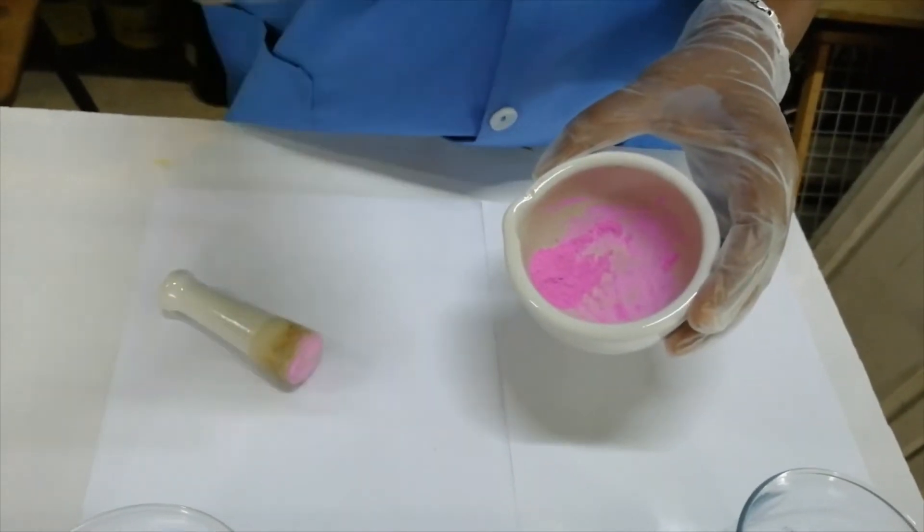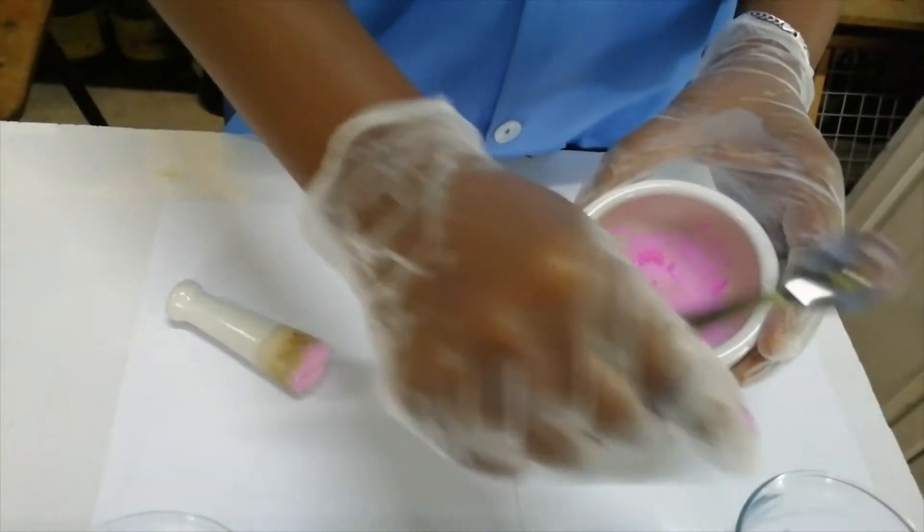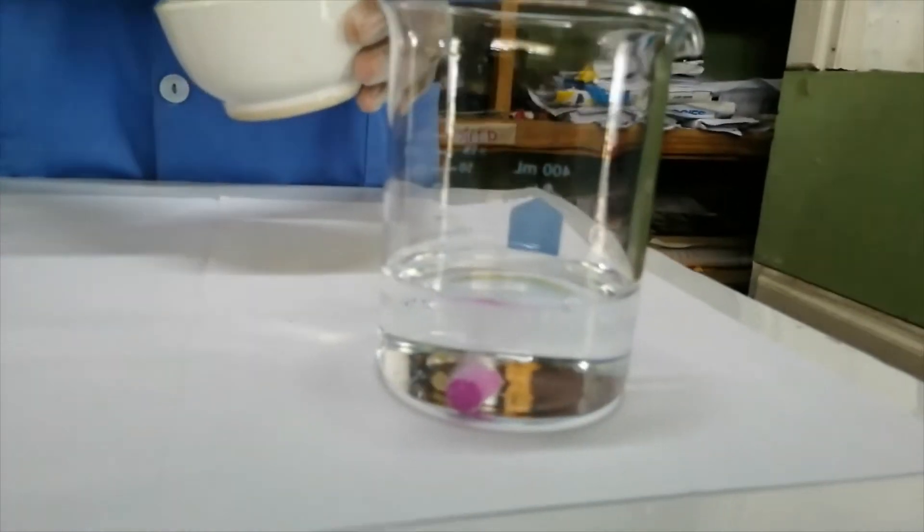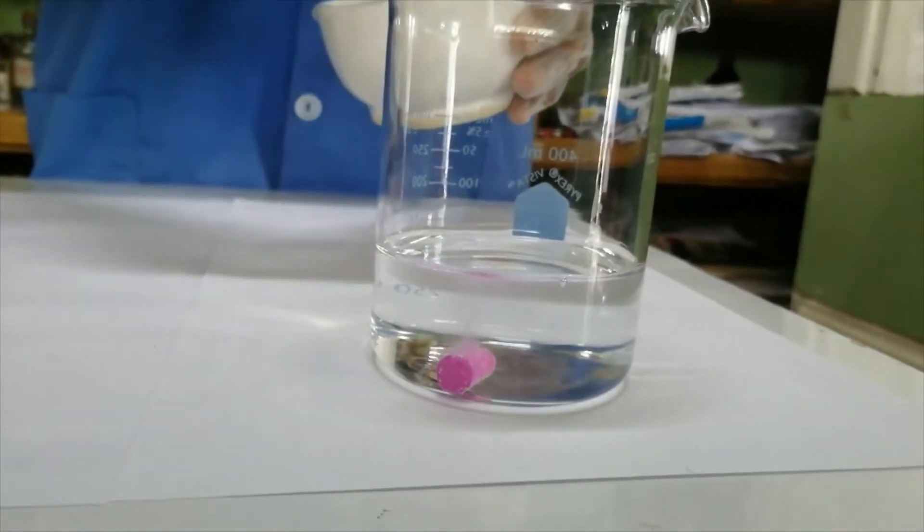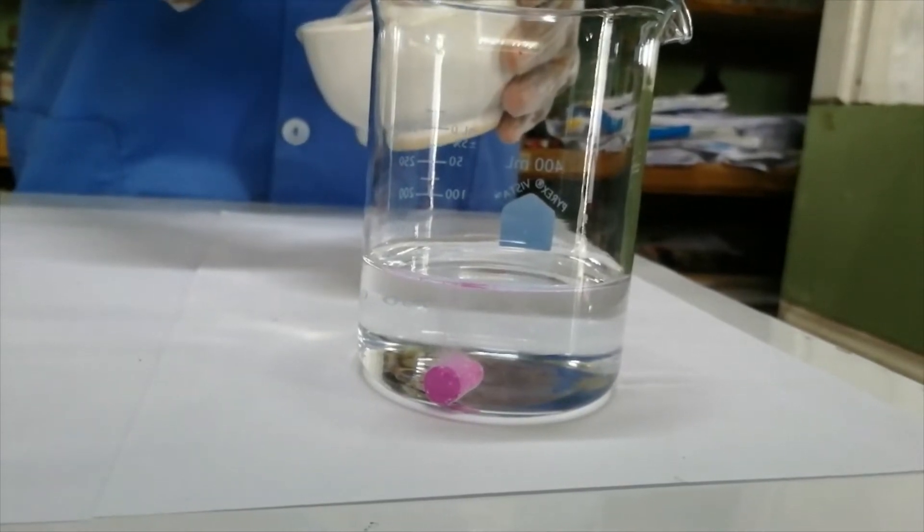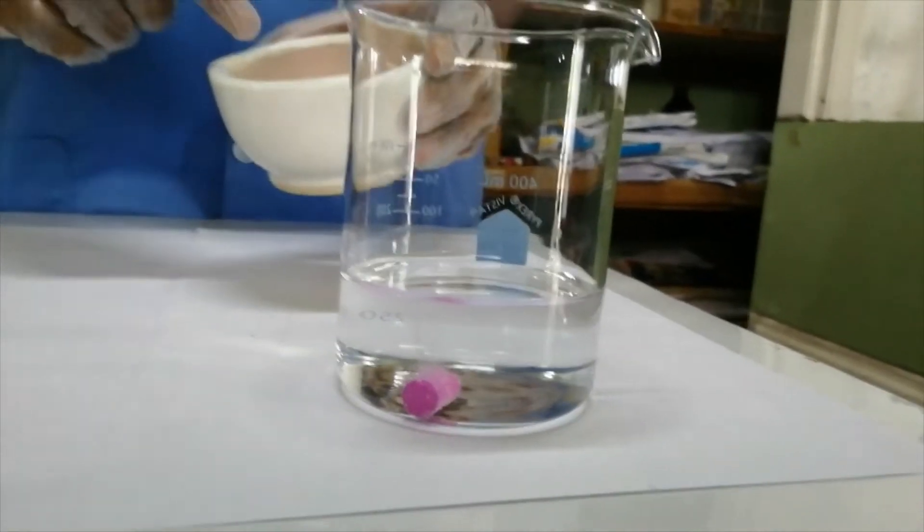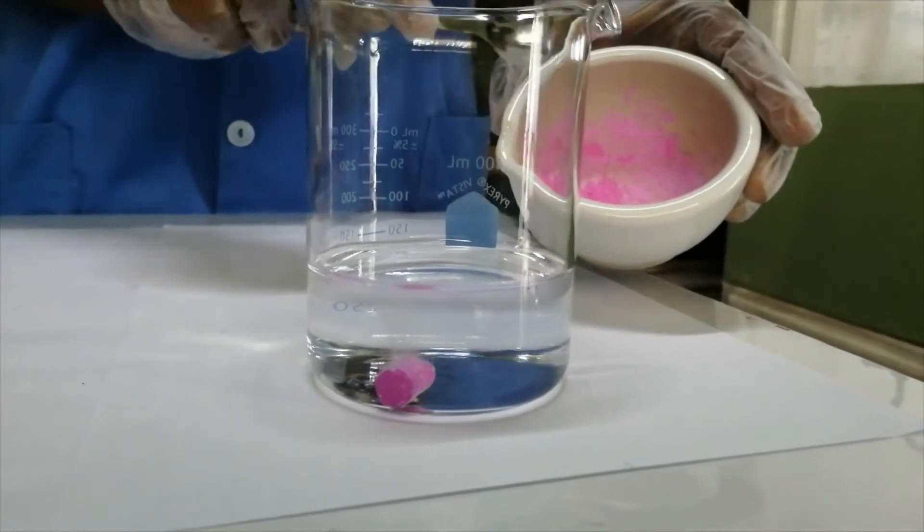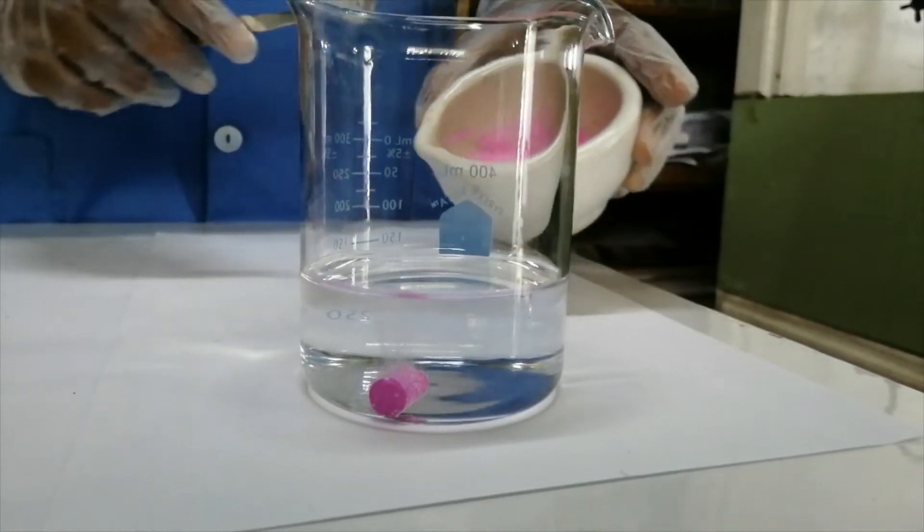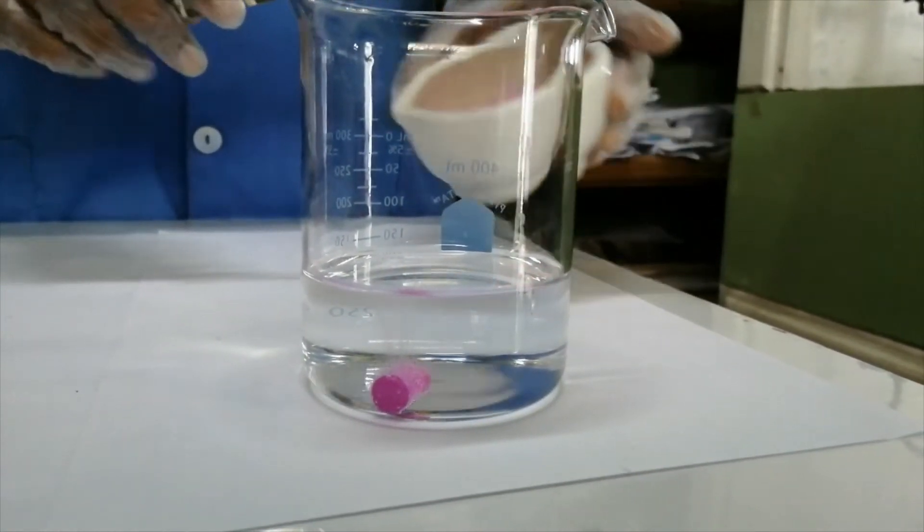Let me add this to the beaker so you can look at the reaction taking place. This piece of chalk has a larger volume and a very low surface area, whereas what's in this mortar has a very high surface area but a low volume.